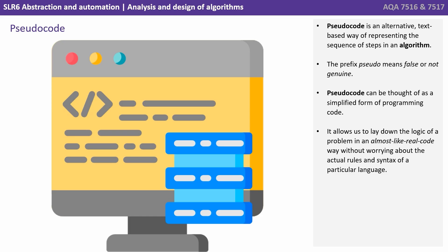The prefix pseudo literally means false or not genuine. So pseudocode can be thought of as a simplified form of programming language. It allows us as programmers to lay down the logic of a program in an almost real-code way, without actually worrying or getting bogged down with the actual rules and syntax and grammar of a particular language.